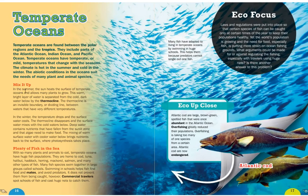In the summer, the sun heats the surface of temperate oceans and allows many plants to grow. This warm, bright layer of water is separated from the cold dark water below by the thermocline — an invisible boundary between waters of very different temperatures. In the winter, temperatures drop, the surface water cools, the thermocline disappears, and the surface water mixes with cold water below. Deep water contains nutrients that algae need to make food; mixing brings these nutrients back to the surface where photosynthesis takes place.